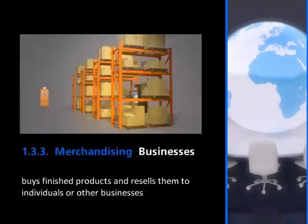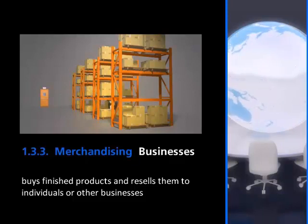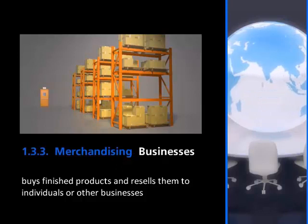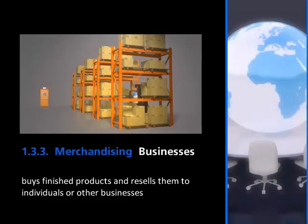A merchandising company buys goods, adds value to them, and then sells them — it does not make the goods. Instead, a merchandising business buys goods for the purpose of adding its own particular value and then sells them to another company or customers. There are two types of merchandising companies: a wholesale company, which buys goods, adds value, and sells them to other companies; and a retail company, which buys goods, adds value, and sells them to final consumers. Wholesale companies are not familiar to us because we do not buy things from them.